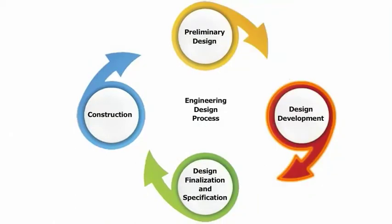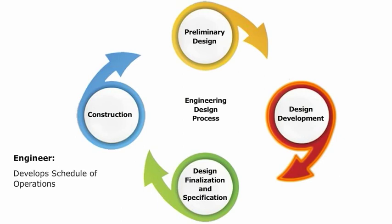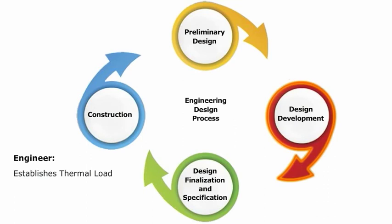During the design development phase, one alternative is usually chosen as the best combination of aesthetic, social, and technical solutions for the building's program. The engineer is given the latest set of drawings and programming information for the building, and lists with the architect the range of acceptable air and surface temperatures, air motions, relative humidities, lighting levels, and background noise levels for each activity to take place in the building. The engineer develops a schedule of operations for each activity, determines the thermal comfort zones by considering these activities and their schedule, the amount of heat that will be generated by the activities, and the building's orientation. Finally, the engineer establishes the thermal load for the worst winter and summer conditions and for average conditions during the majority of the building's operating hours for each zone.